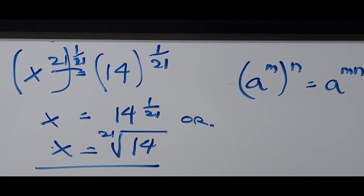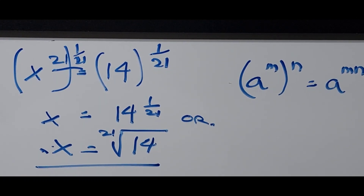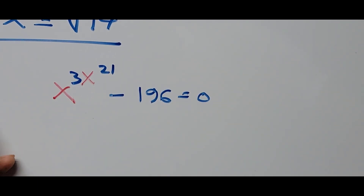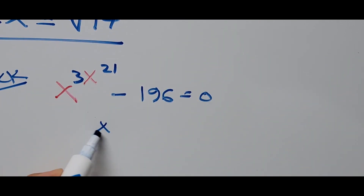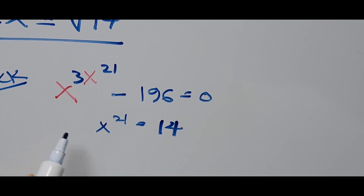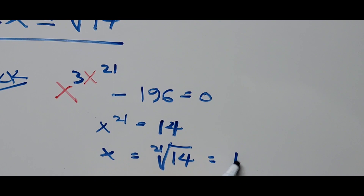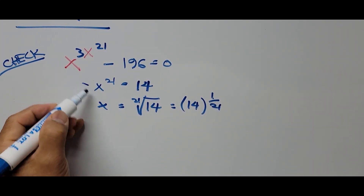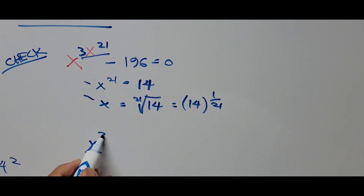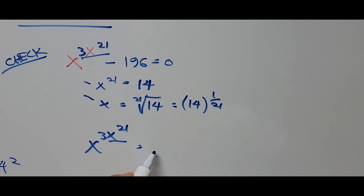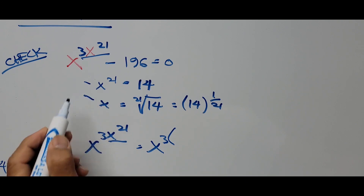If we were to check our answer, all we have to do is substitute the value of x into the original equation. To check: we're using the value x to the 21 equals 14, and x equals the 21st root of 14, or 14 raised to the exponent 1 over 21. Substituting those values of x, focusing on the exponent on the left side — x raised to 3x raised to 21 — this part, x to the 21, is 14. So that is x cubed times x to the 21 equals 14.